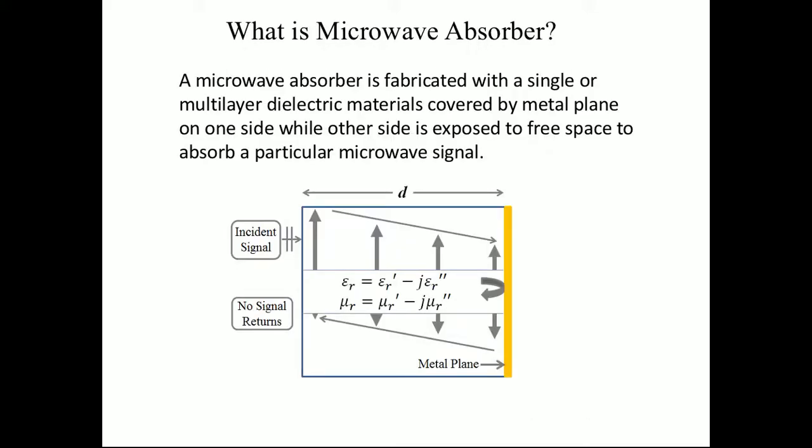What is a microwave absorber? A microwave absorber is fabricated with a single or multi-layered dielectric materials covered by a metal plane on one side, while the other is exposed to free space to absorb a particular microwave signal.